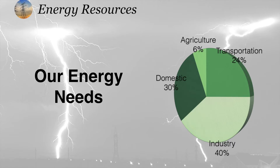Our basic energy needs are mainly for industry, where we use almost 40% of our total energy. Then comes domestic uses at 30% of the energy, followed by 24% for transportation and 6% for agricultural uses.